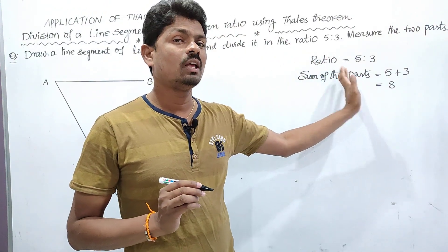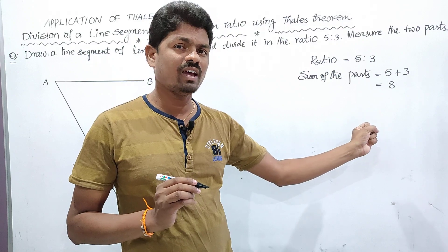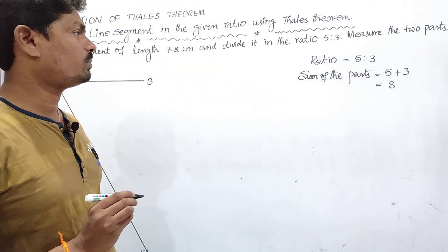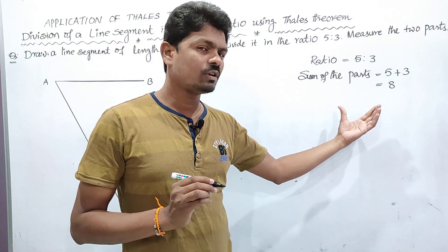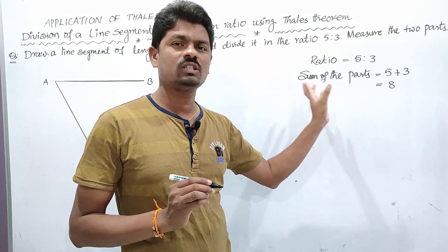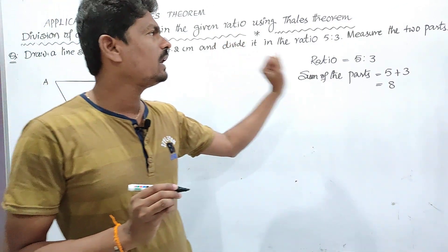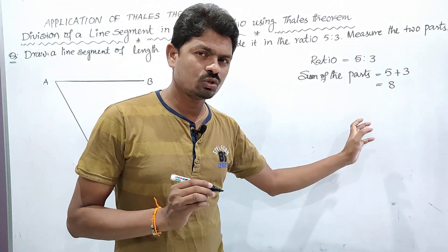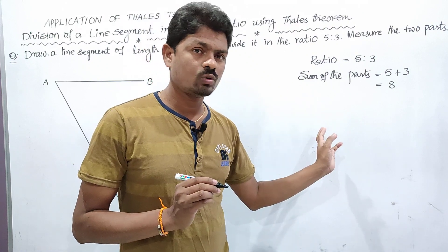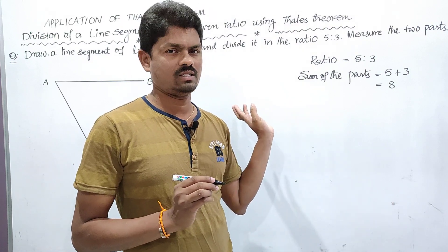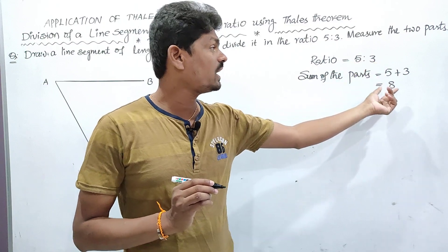For example, if the given ratio is 4 is to 3, then we mark 4 plus 3 equals 7 points. If the ratio is 2 is to 4, sum is 6 points. So depending upon the given ratio, we decide how many points to mark off on the ray AX. Here the ratio is 5 is to 3, so we mark off 8 points.